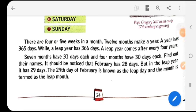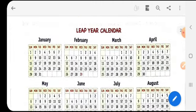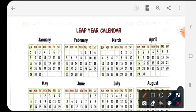So the 29th day of February is known as the leap day and the month is termed as the leap month. So this is how the year goes and every month and day is counted. Now here we have the leap year. So you can see children here that we have the 29th day in February that is in the leap year.